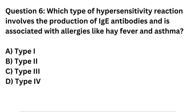Question 6. Which type of hypersensitivity reaction involves the production of IgE antibodies and is associated with allergies like hay fever and asthma? A. Type 1. B. Type 2. C. Type 3. D. Type 4.